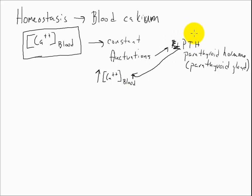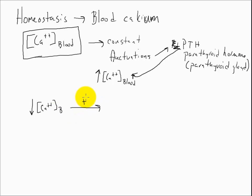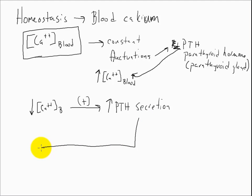So if the parathyroid gland releases PTH, it ultimately should lead to an increase in blood calcium. When that level gets to where it needs to be, we will shut off the parathyroid hormone — we call this a negative feedback system. A decrease in blood calcium causes an increase in PTH secretion, which raises blood calcium, which then turns the system off.